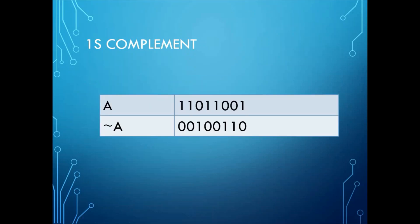In case of bitwise XOR, it returns 1 if any one of the digits is 1. If both the digits are 1, or if both the digits are 0, in that case it returns 0. Ones complement is the unary operator — that is, it has only one operand. If the value stored in A is 11011001, when we perform complement operation on A, wherever there is 1 it returns 0, and wherever there is 0 it returns 1.